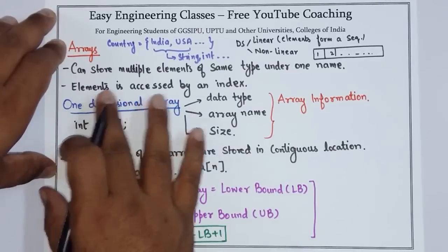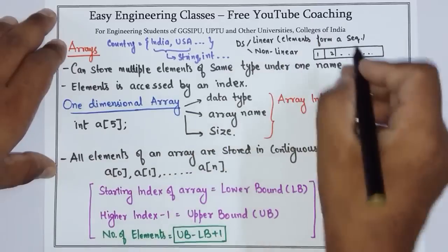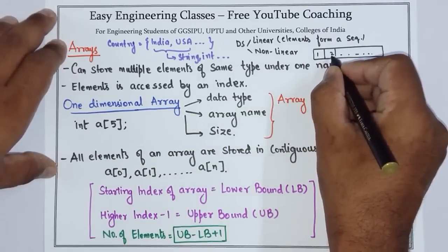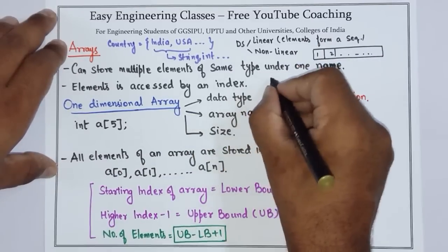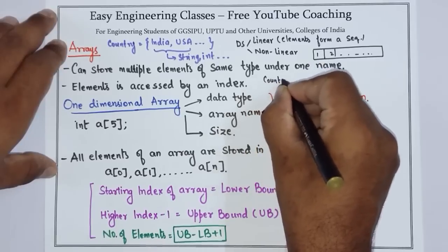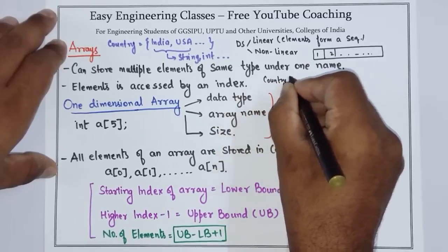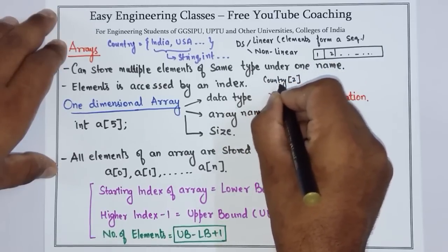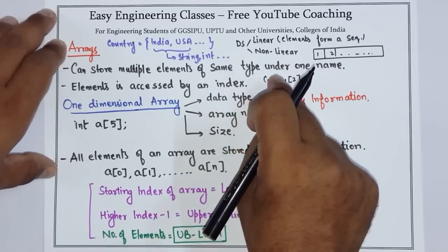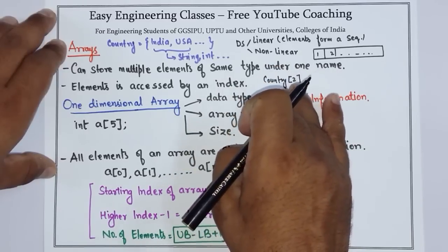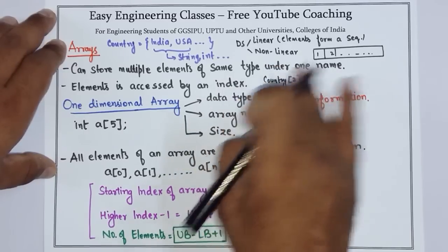Arrays can be accessed by an index. Suppose I want to access the array element value at index two — I can simply write country[2]. It will give me the value of the element which is present at the second index of this array variable.